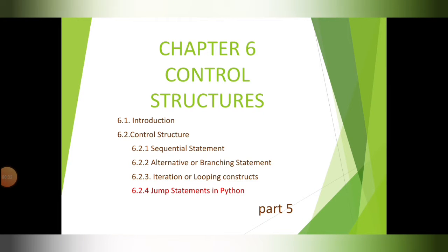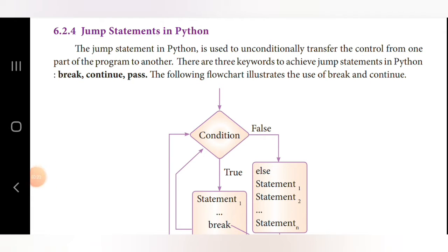In this video we are going to discuss about 12th standard computer science chapter 6, control structures. Last class we discussed about the different types of looping statements in Python. Now in this class we are going to discuss about jump statements in Python. Jump means we are transferring the control from one place to another place.